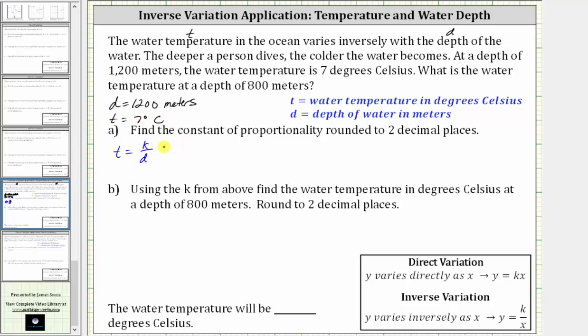Knowing this information will allow us to find the constant of proportionality, which is part A of this question. So we substitute 1,200 for D and seven for T. Performing the substitution gives us the equation seven equals K divided by 1,200.